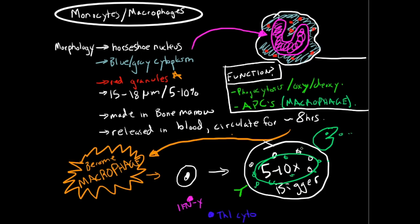One particularly interesting type are microglial cells in the brain, which clean up cellular debris but are also implicated in various diseases such as cancer and neurodegenerative disorders like Alzheimer's disease. There are also histiocytes in the connective tissues, alveolar macrophages in the lungs, mesangial cells in the kidney, and osteoclasts in the bone — so various types depending on location.